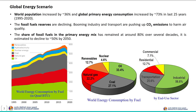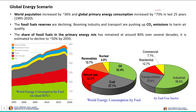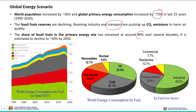Let us first discuss about the global energy scenario. In the last 25 years, world population increased by around 36 percent, and due to this rapid surge in population and industrialization, global energy demand increased by leaps and bounds — close to around 73 percent. The demand for energy also increased in the transportation sector, resulting in a surge in consumption of fossil fuels. The excessive use of fossil fuels causes pollution, pushing up CO2 emissions and harming air quality. The share of fossil fuels in the primary energy mix has remained constant at around 80 percent over several decades.